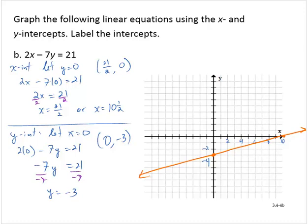And so there's the line defined by 2x minus 7y equals 21.